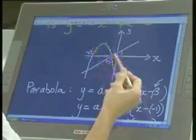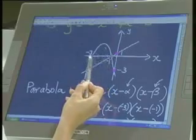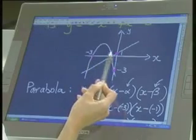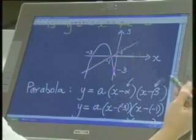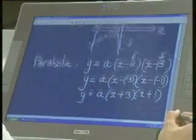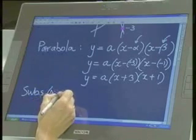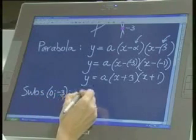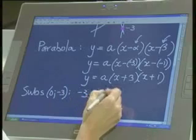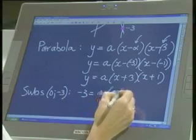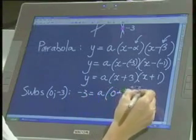So if we go back to the parabola there, we've used those two, so we can't use them again. We need to use the other point, which is 0, negative 3. So I'm going to substitute 0, negative 3 into that equation.